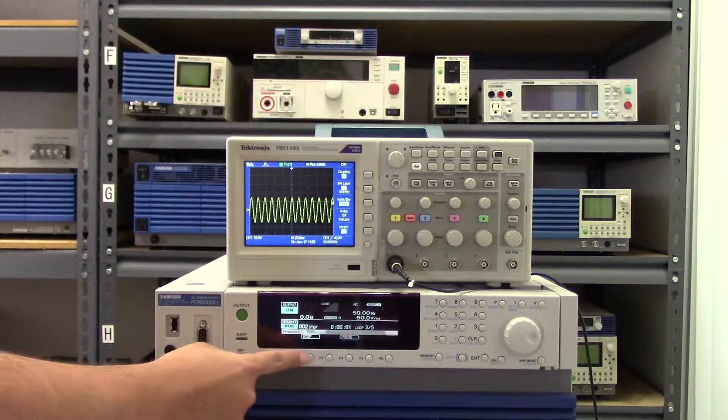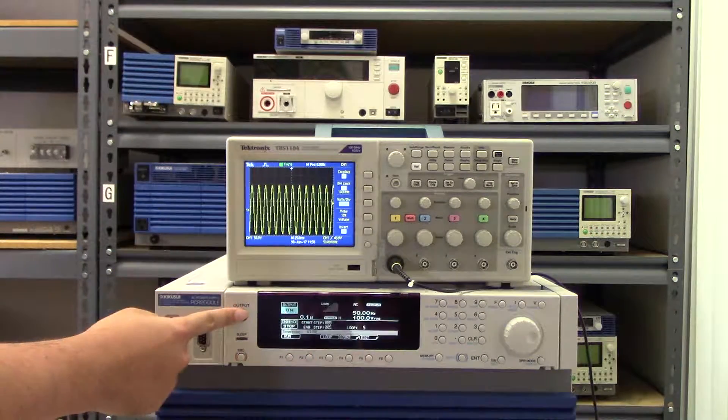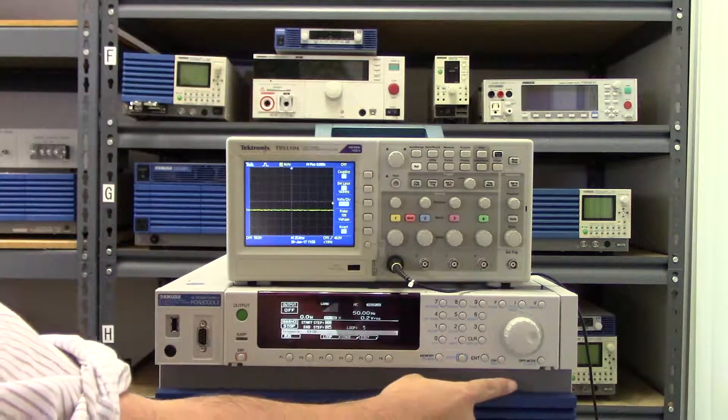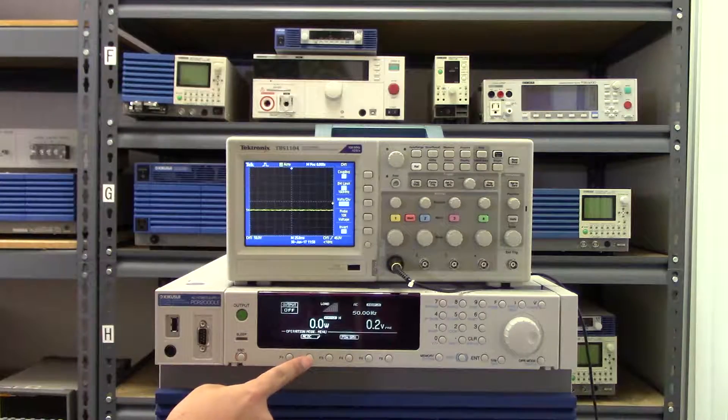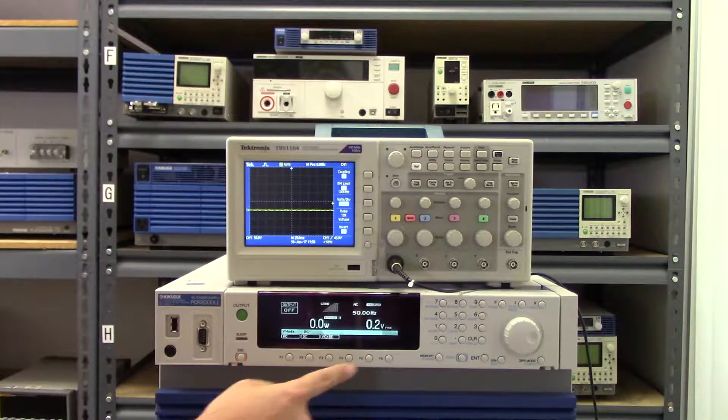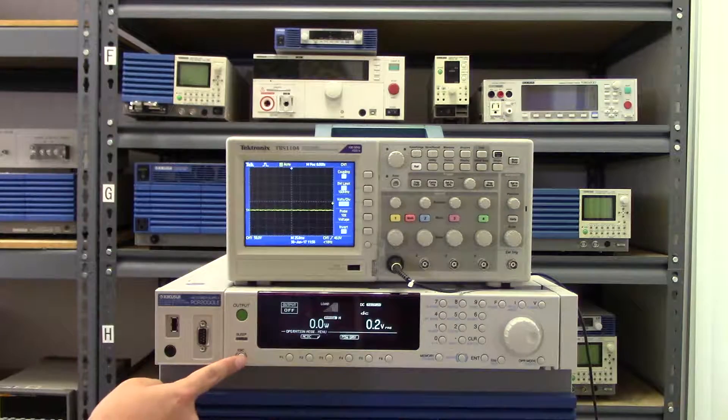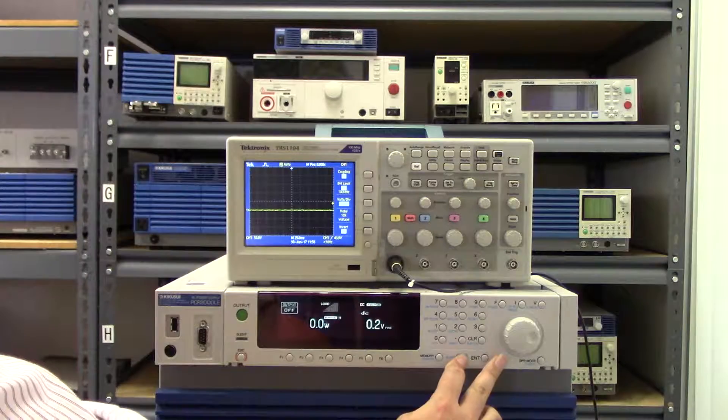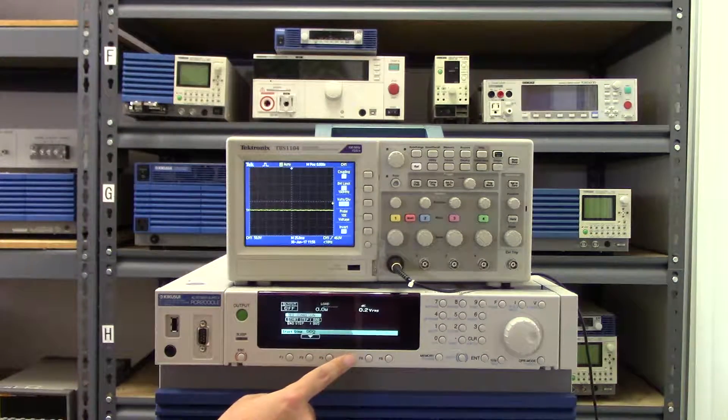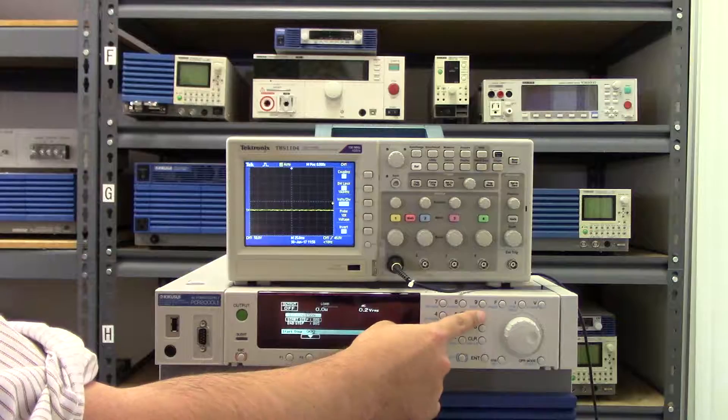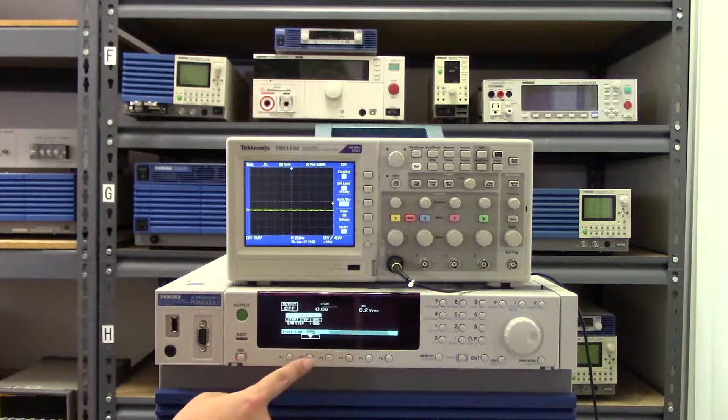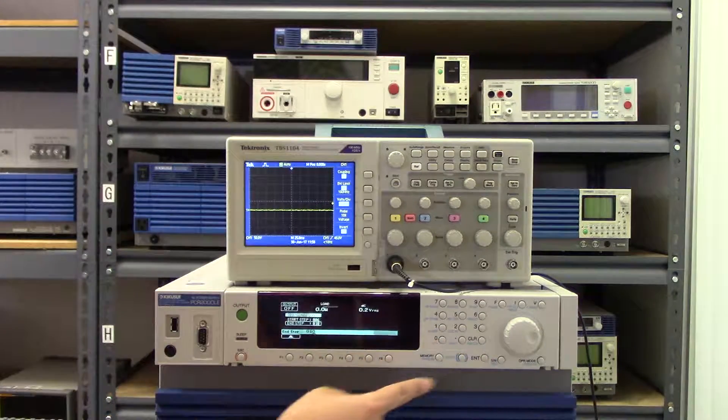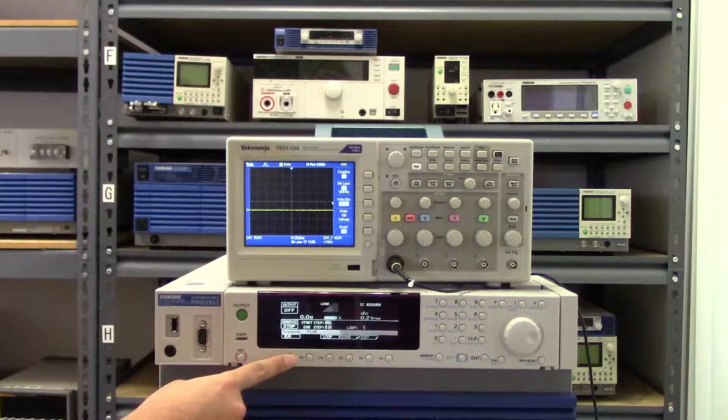Now let's look at this PCRLE in DC mode. We switch to DC mode and enter the steps we want to start at in the sequence function. Now that we have it set, we'll click it to run.